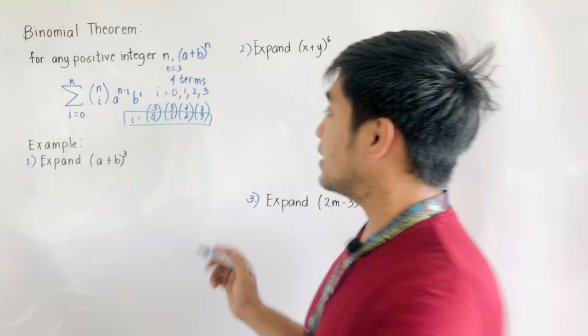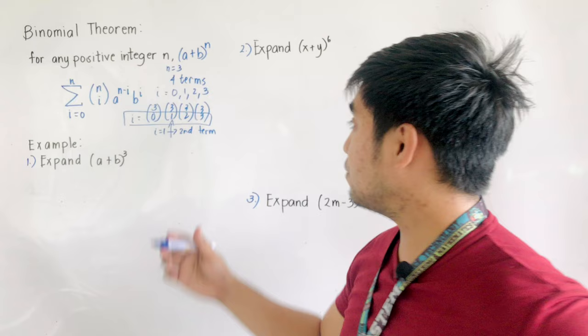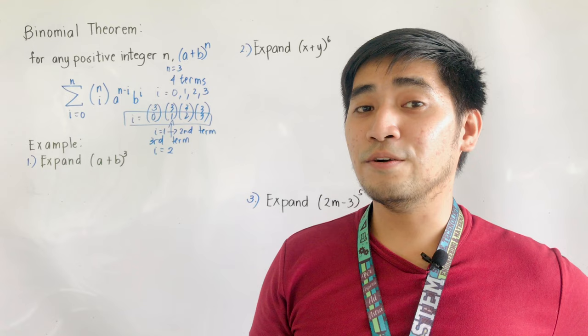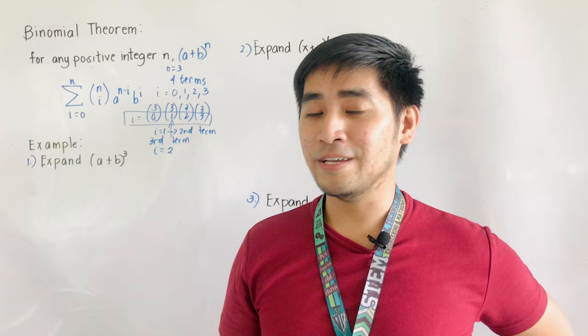If you're asked to get the second term, i is equal to one for the second term. If you're asked to get the third term, i is equal to two, since we are starting with zero. So zero is counted as the first term, one is the second term, and two is the third term. That is how we expand a binomial using the Binomial Theorem.